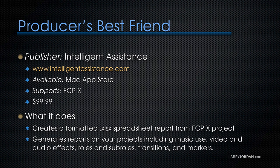The first one is called Producer's Best Friend. It's published by Intelligent Assistance at IntelligentAssistance.com, available at the Mac App Store, supports Final Cut Pro X, and it's $99. What it does is it creates a formatted Excel spreadsheet, which you can open in Numbers, and it's a report on your Final Cut project.